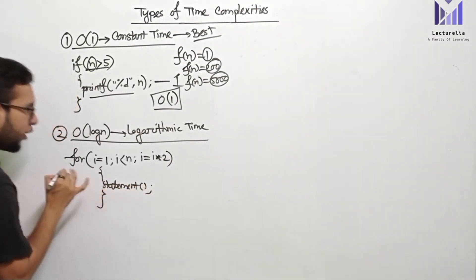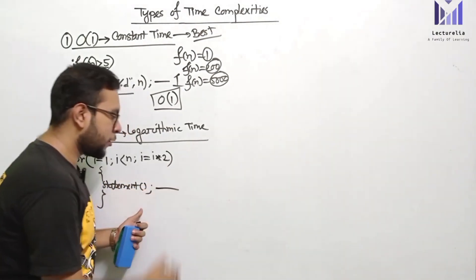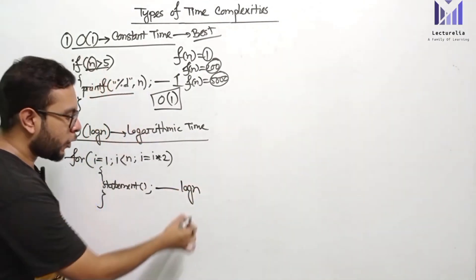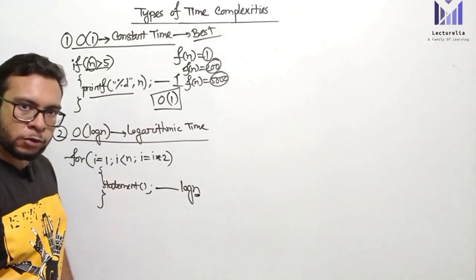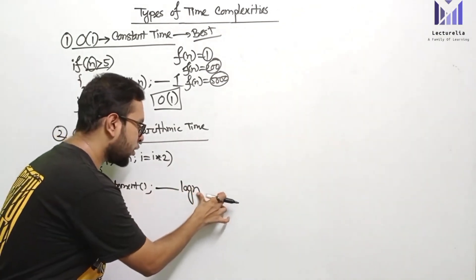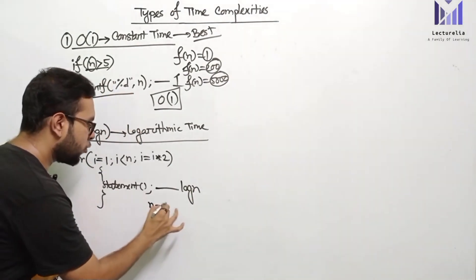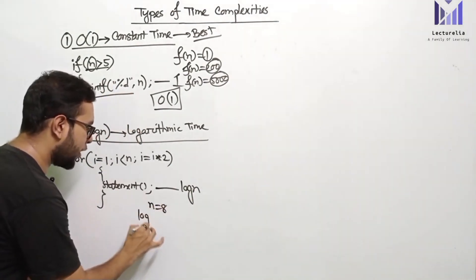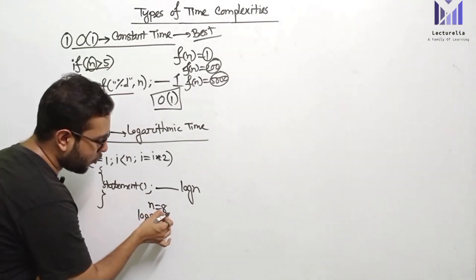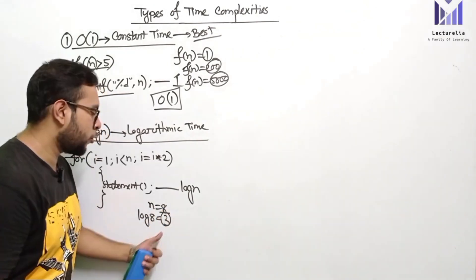The next type is order of log n, which is logarithmic time. The run time depends on the input size, but the input size is divided — near about half the amount each time. For example, we see here that the statement runs in log n time, so the input size is halved approximately each iteration.